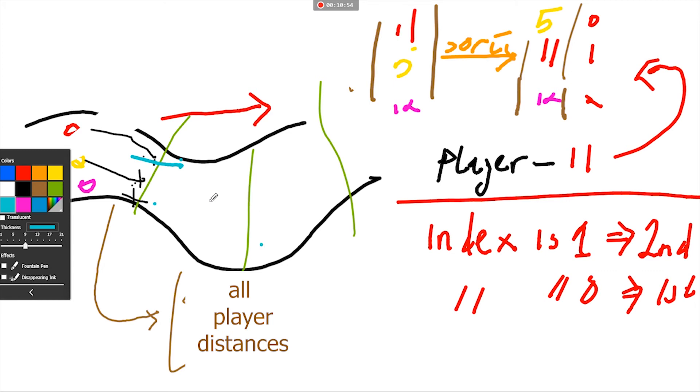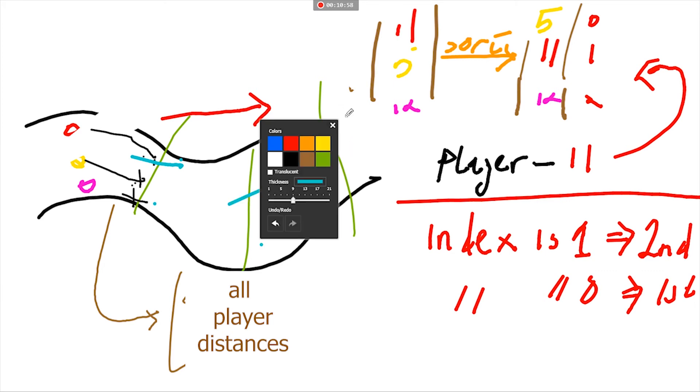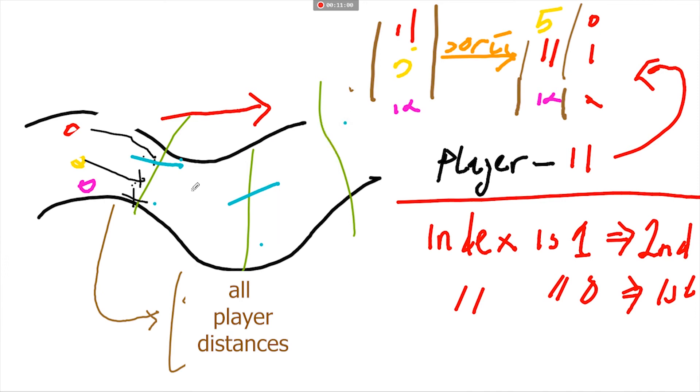Once a player goes through a waypoint, the focus will change from this waypoint to the next waypoint. Once he goes through this waypoint, it's going to change focus to the next waypoint, making the calculation even more accurate.